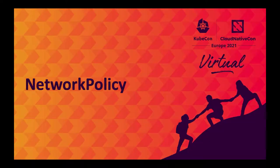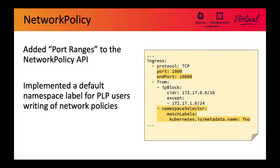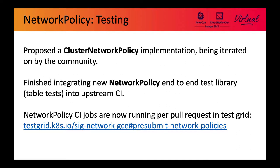Network policy is another area the SIG is working on. One of the most voted requests has been a port range API similar to what many CNI providers already have — we've added an endport field to the network policy definition. We have also worked with the API machinery team to add default labels on all namespaces, addressing the common request of how to select a namespace without RBAC permissions to set labels. The SIG has been collaborating on cluster network policy implementations, allowing administrators to define defaults across multiple namespaces. The KEP is now available and feedback from the security or administrative space is welcome. We've also worked with SIG testing to ensure the network policy API is exercised on all relevant CNIs that support network policies.